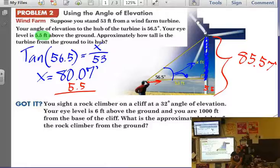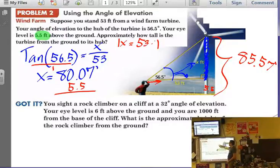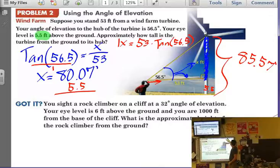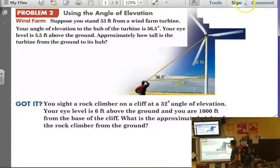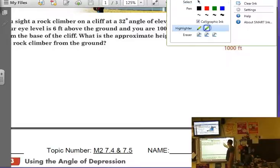In our calculator, we essentially look at this as a proportion, and I cross multiply to solve for the trig. So I get 1 times x equals 53 times that tangent. Let's move on to number 2. Your eye level, let's say I'm the person in this problem now. Your eye level is 6 feet above the ground.